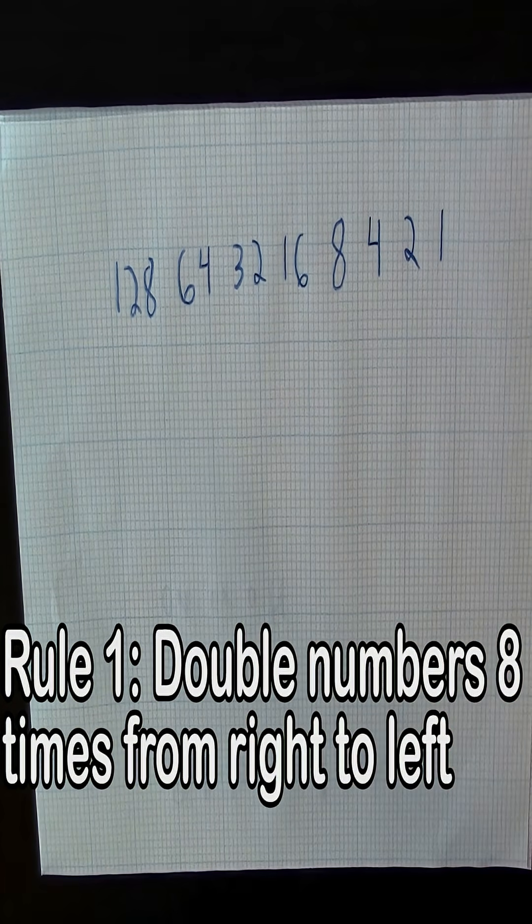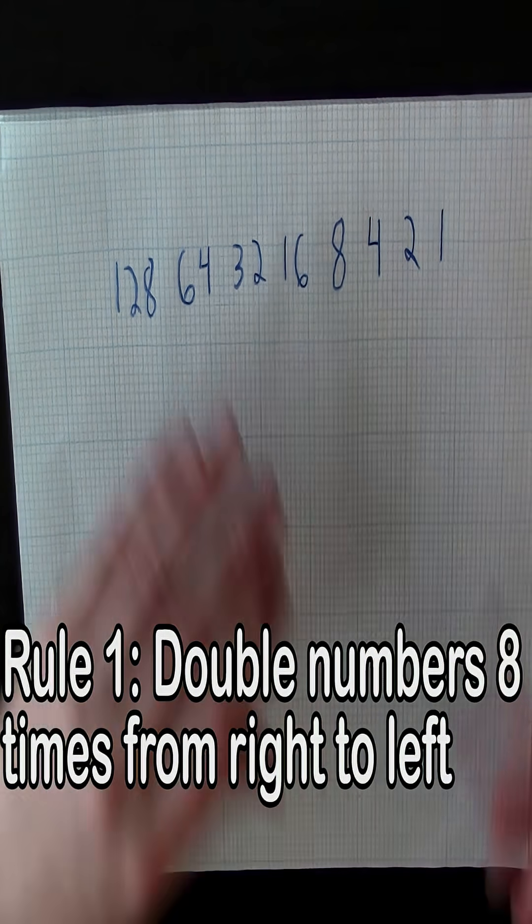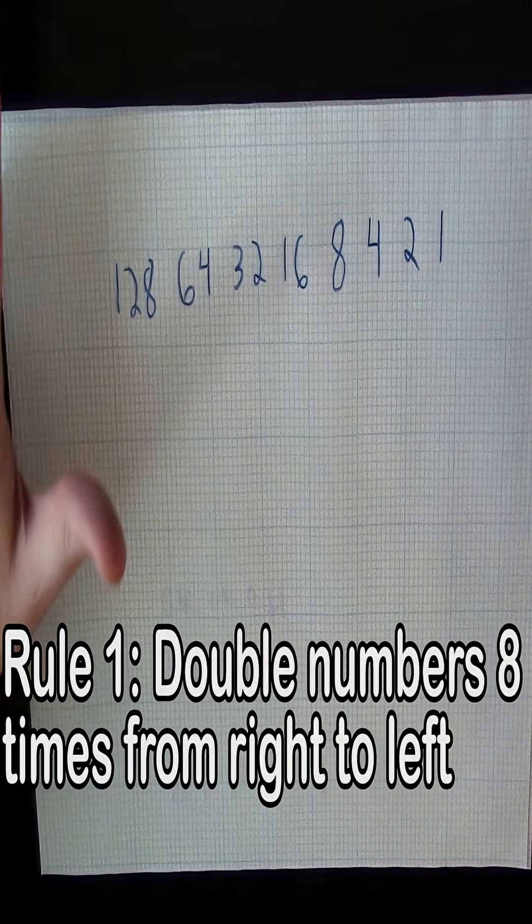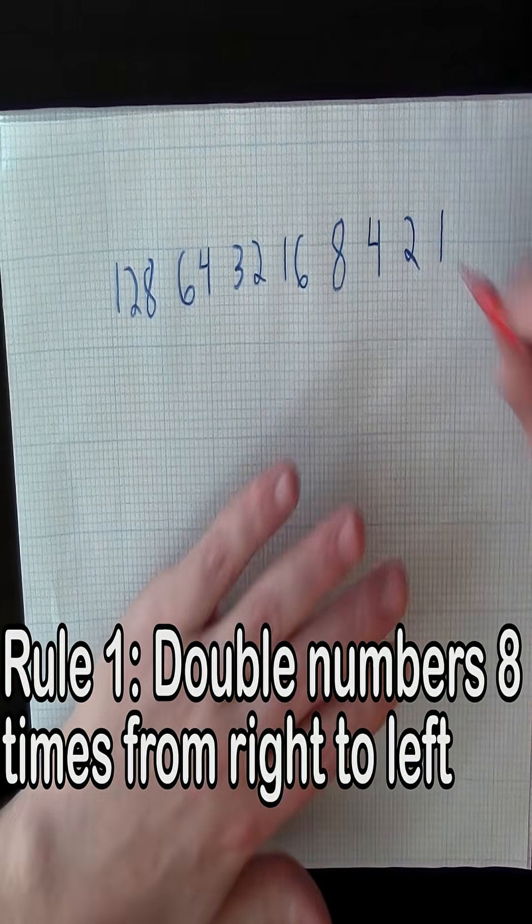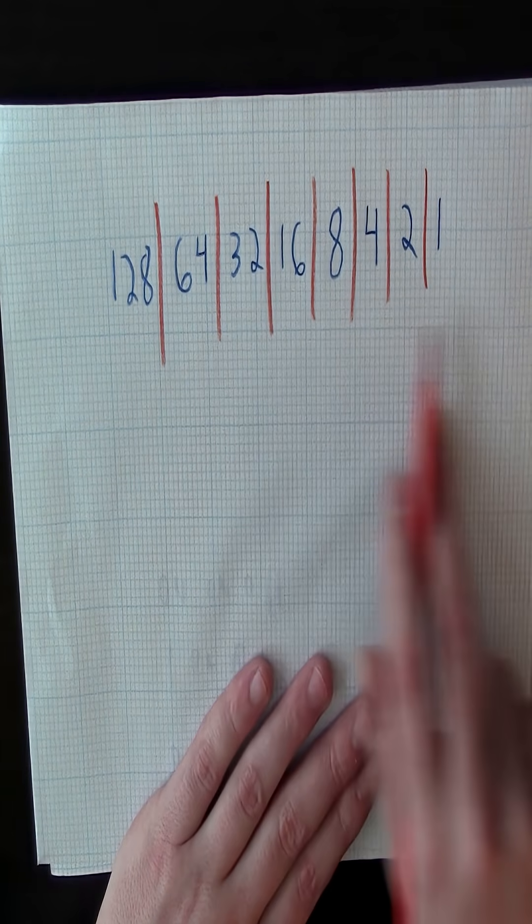So that's the first rule that you have to remember in order to read and write binary: take one and double it eight times. And that's actually going to represent our eight bits.